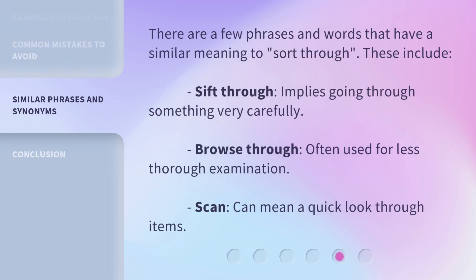There are a few phrases and words that have a similar meaning to 'sort through.' These include: 'sift through,' which implies going through something very carefully; 'browse through,' often used for a less thorough examination; and 'scan,' which can mean a quick look through items.